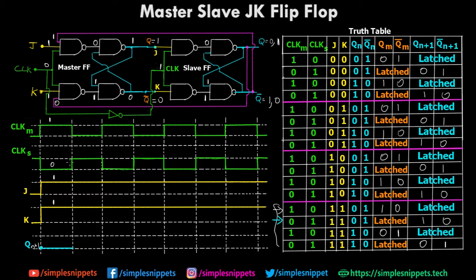Now clock of master becomes 0 and clock of slave becomes 1. The initial state of q was 0, but the next state becomes q(n+1) = 1. So it's going to stay 1 for this entire duration when clock of master is 0 and clock of slave is 1.